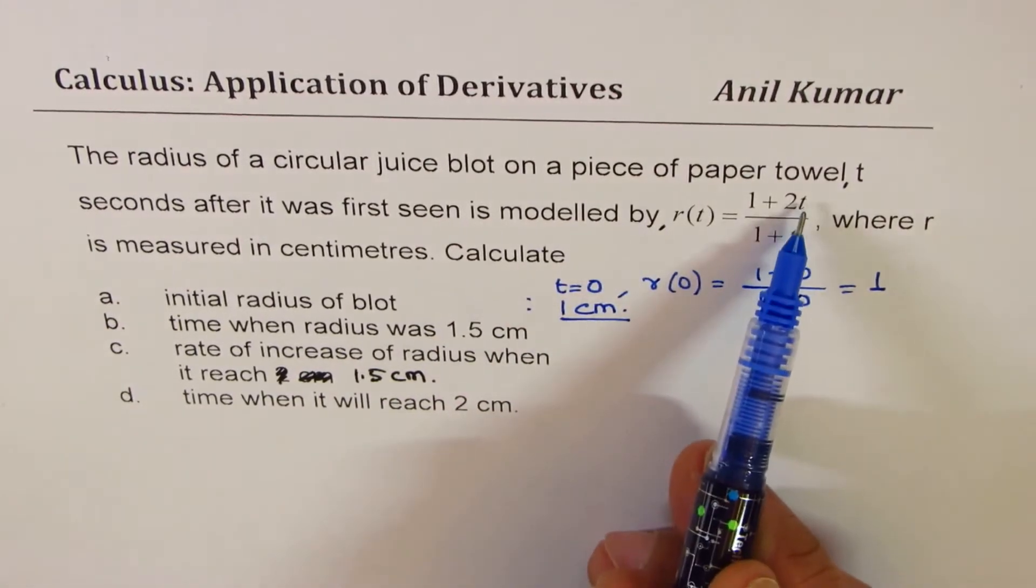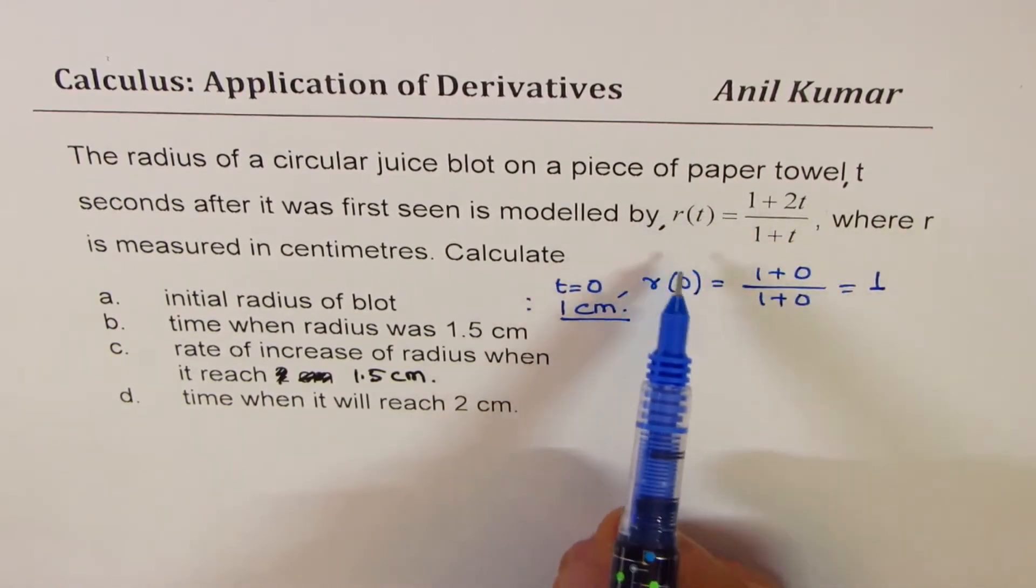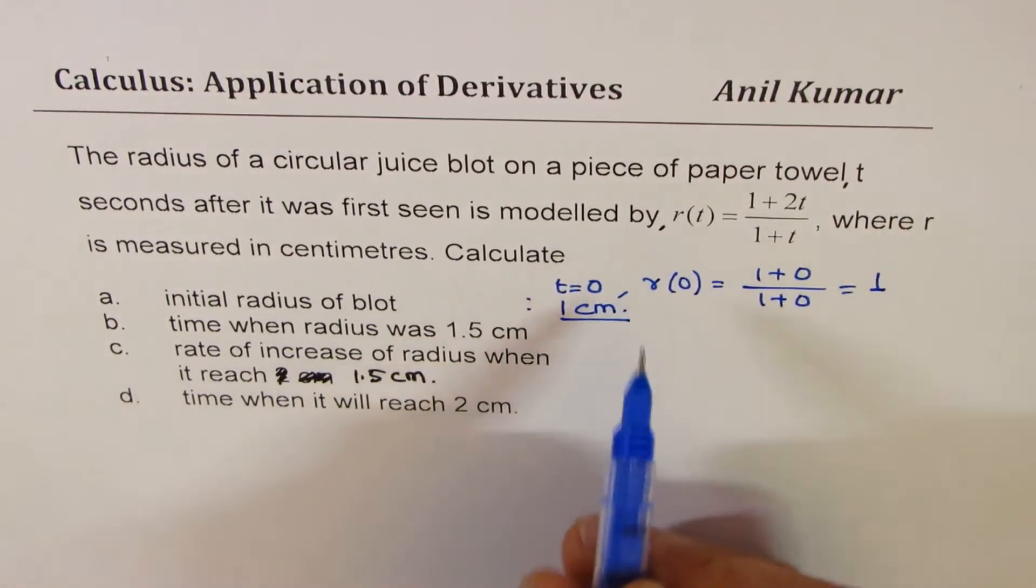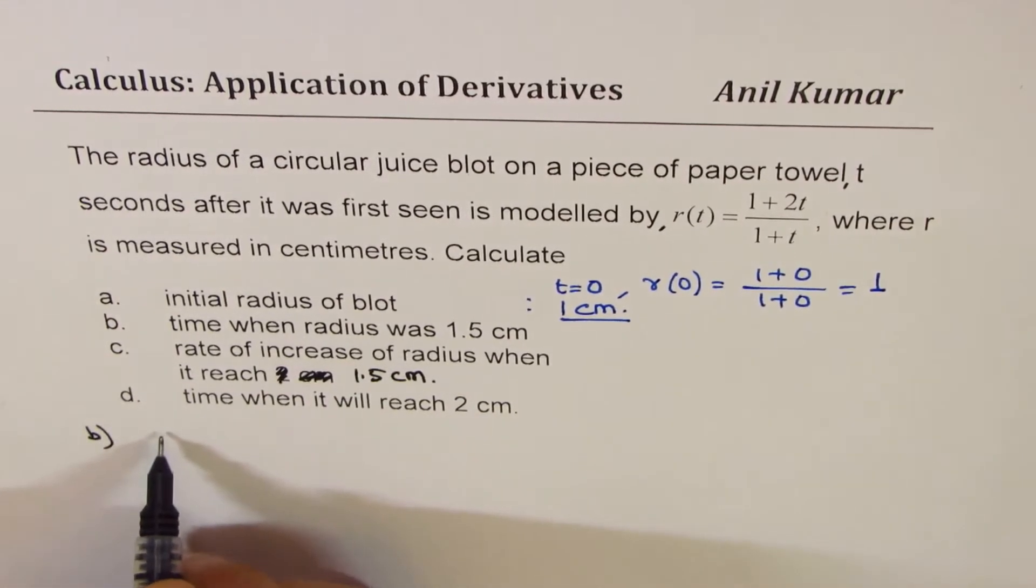Time when the radius is 1.5 centimeters - we need to calculate time when the radius is given to us, so we need to rearrange this formula. Let's do part b now.